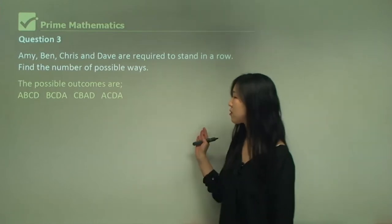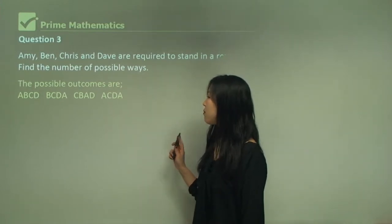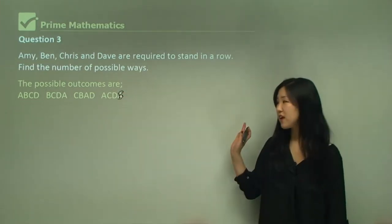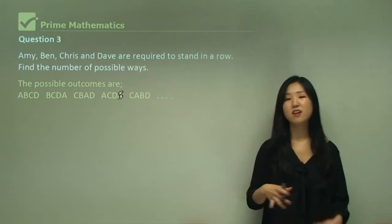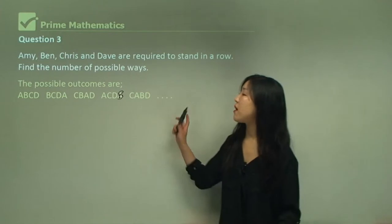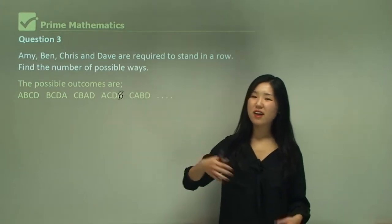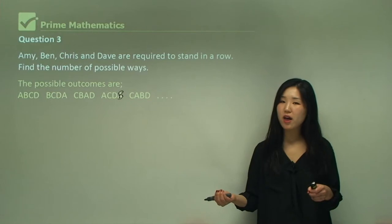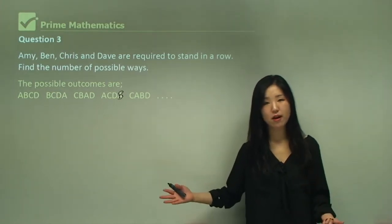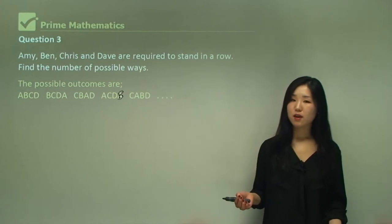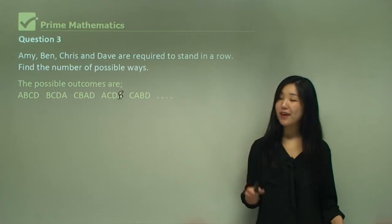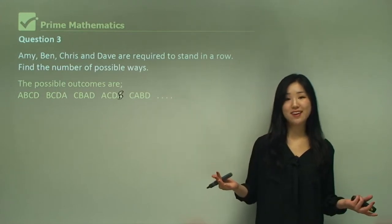The list goes on and there are so many different outcomes. When you try to list them out you can make a little mistake, miss one, or put two of the same kind — it's very risky, and with so many different outcomes it's going to be hard to list them all out. So here comes our basic counting technique. I'm going to find the possible outcomes for different events.